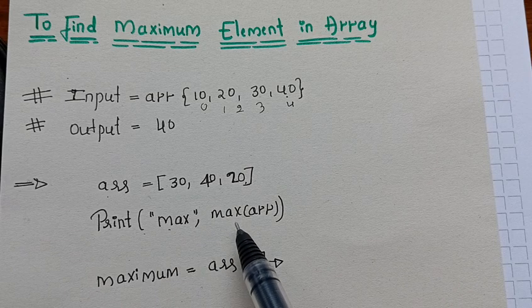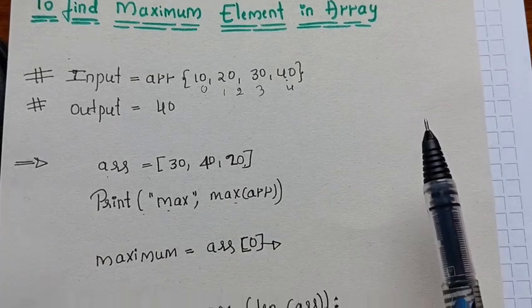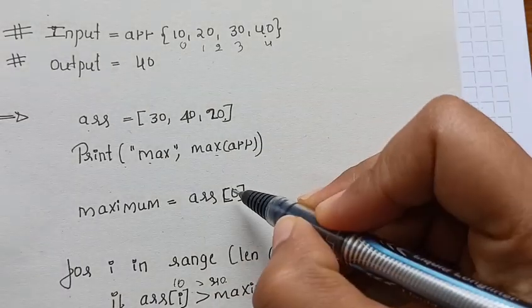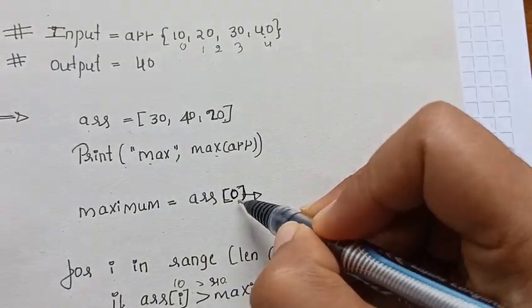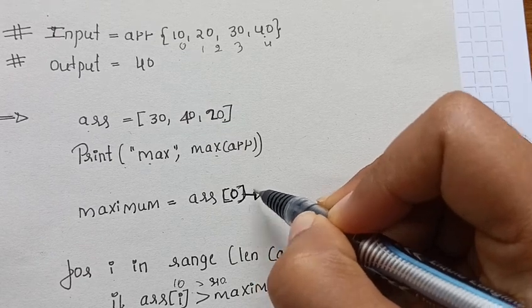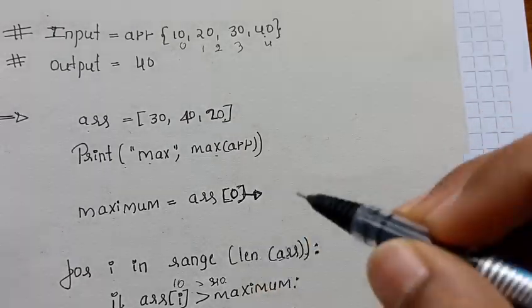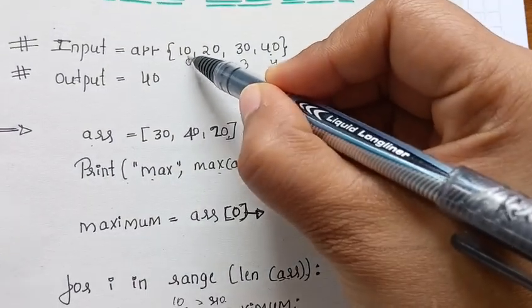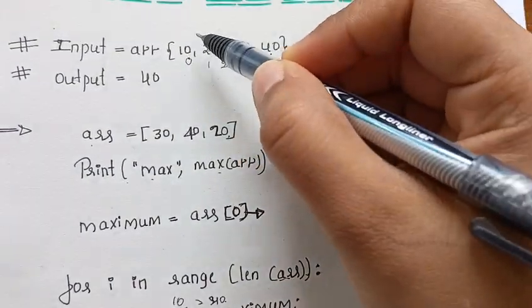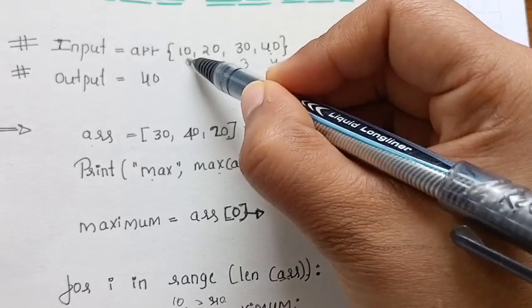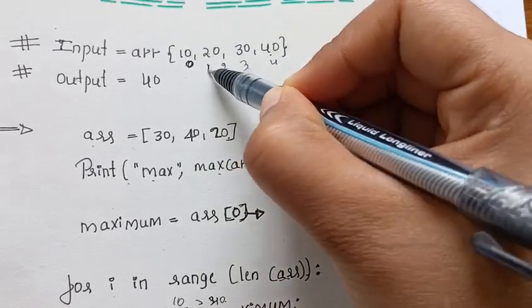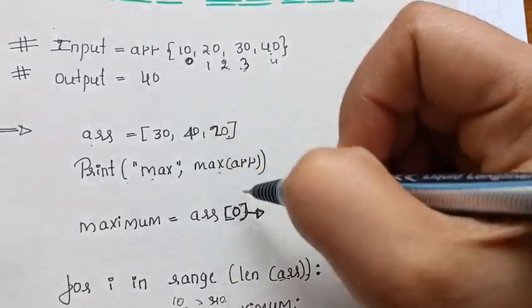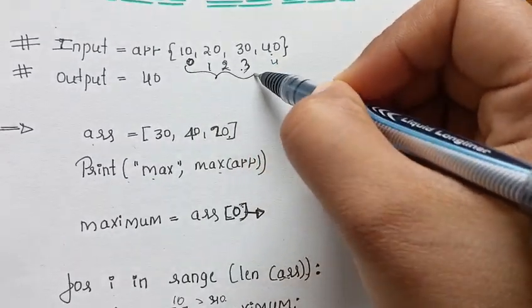Print maximum, max(arr). The next step is maximum equals arr[0]. This represents the index value - we are going to use index 0, which represents the first value in the array.